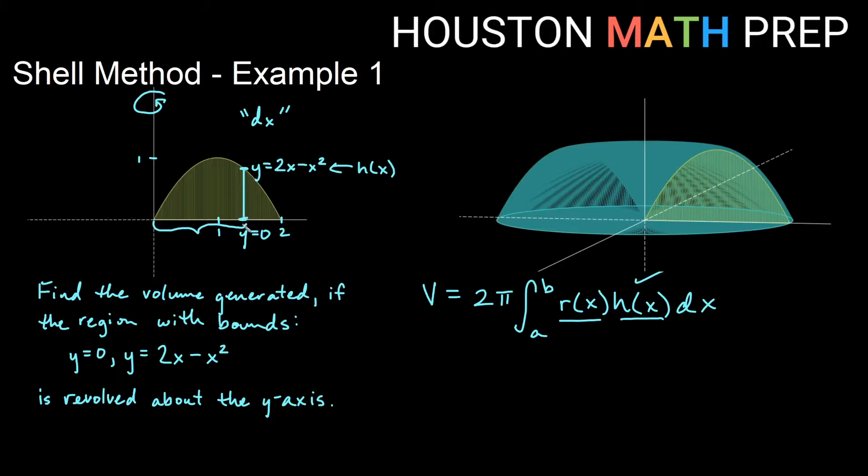Remember, you wouldn't want to just pick, oh, this looks like 1.3. The idea is you need a rule for any rectangle you would draw through the region. And so if I drew it over here, or really close to the axis, or way out here, it would still be the distance from the axis of revolution would be the x value. So this value is going to be x for our radius. So that is our r(x).